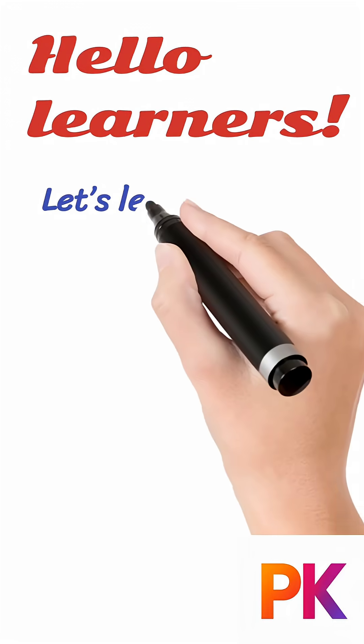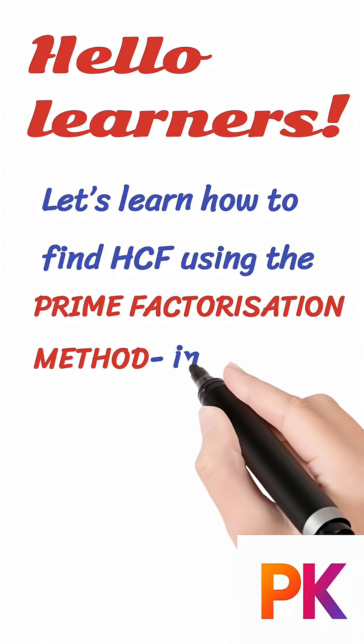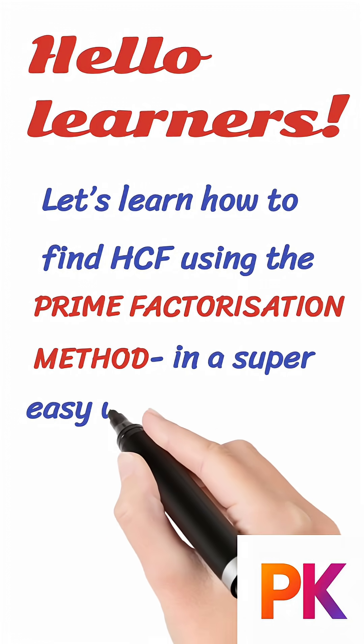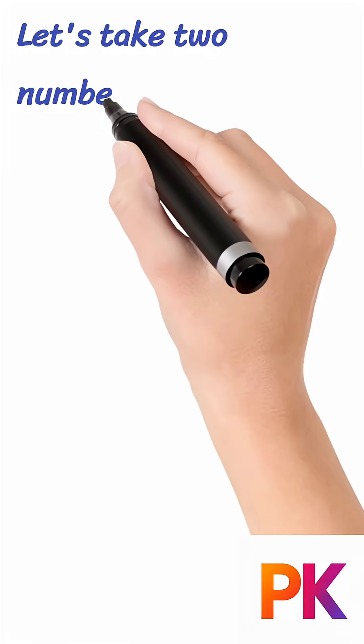Hello Learners! Let's learn how to find the HCF using the prime factorization method in a super easy way. Let's take two numbers 18 and 24.